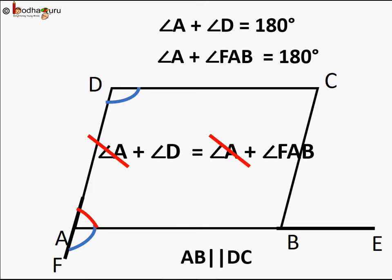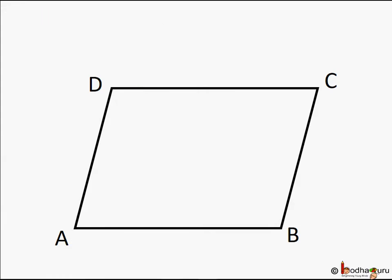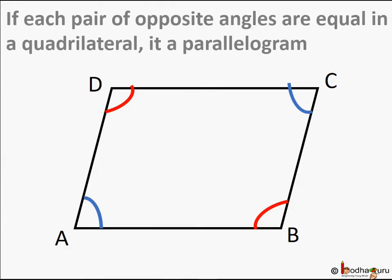For quadrilateral ABCD, both pairs of opposite sides are parallel, hence it is a parallelogram. This proves that if each pair of opposite angles in a quadrilateral are equal, then it is a parallelogram. That's all for now — bye bye!